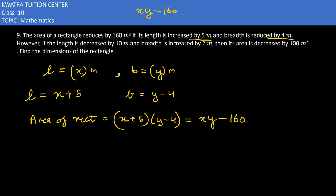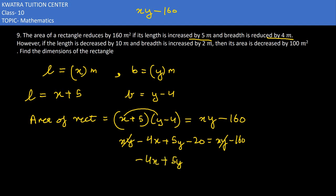Now we expand: x times y gives xy, x times -4 gives -4x, 5 times y gives 5y, and 5 times 4 gives -20. On the right side we have xy minus 160. The xy cancels from both sides. Rearranging, -4x + 5y - 20 = -160, so moving 20 to the right side gives us the first equation: -4x + 5y = -140.